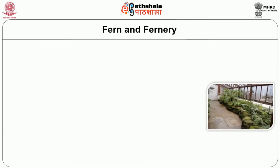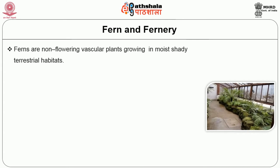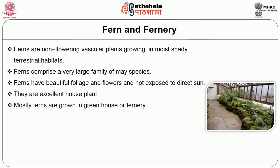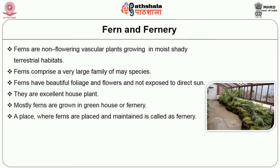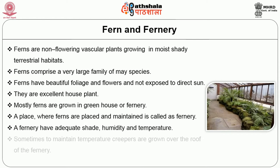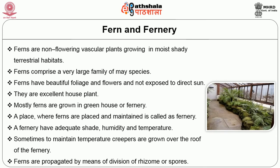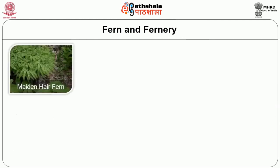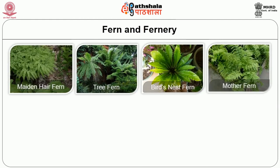We will see about fern and fernary. Ferns are non-flowering vascular plants growing in moist, shady, terrestrial habitats. Ferns comprise a very large family of many species. Ferns have beautiful foliage and are not exposed to direct sun. They are excellent house plants. Mostly ferns are grown in a greenhouse or fernary. A place where ferns are placed and maintained is called a fernary. A fernary has adequate shade, humidity and temperature. Sometimes to maintain temperature, creepers are grown over the roof of the fernary. Ferns are propagated by means of division of rhizomes or spores. Most common Indian ferns are maidenhair fern, tree fern, bird's nest fern, mother fern, rabbit's foot fern, climbing fern, terrible ferns.